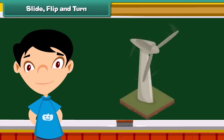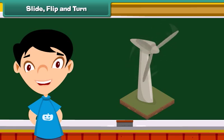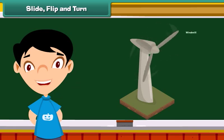Rotating a plane figure around a fixed point is called turning. A real-life example of turning is the windmill.